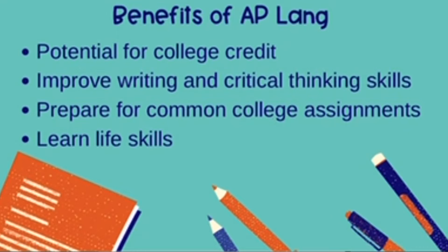For some schools, they'll want a composite of a three; other schools might want a composite of a four; and then some top schools require a five. It's not the same for each subject either, so what they require for AP Lang might be different than, say, AP Bio. So if you know which colleges you might apply to already, it's good to look up this information to be informed.